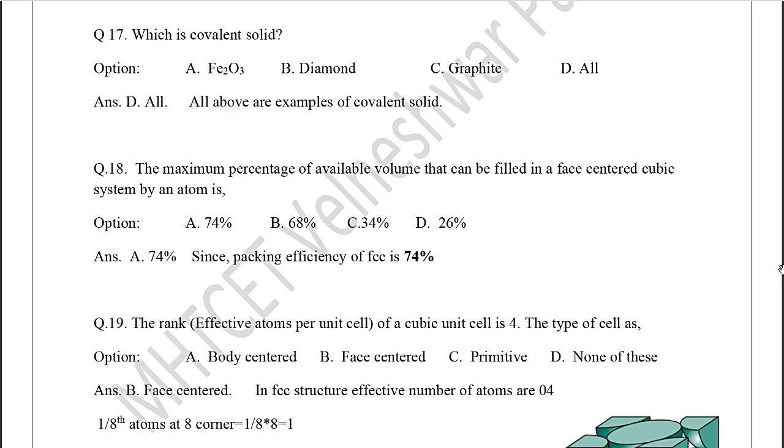Question 17: Which is covalent solid? Options: Fe₂O₃, diamond, graphite, or all. And correct option is D, all.